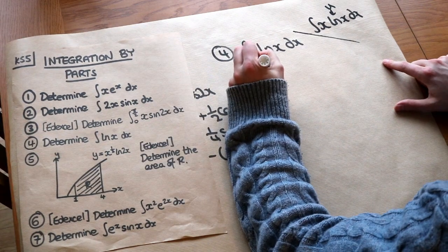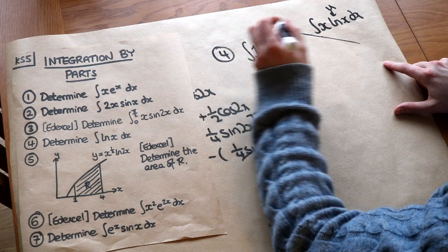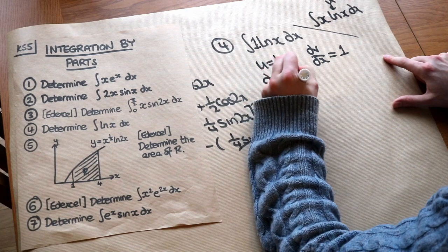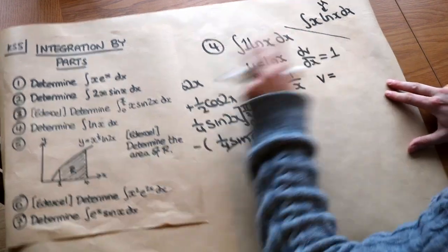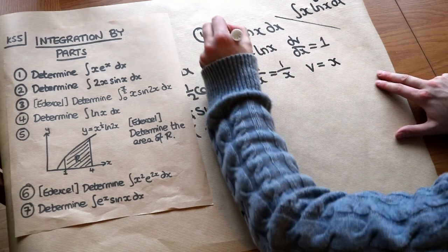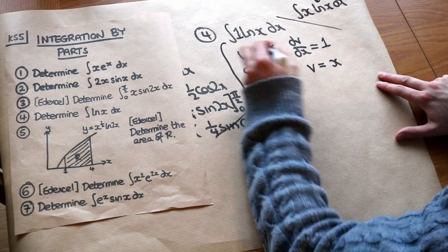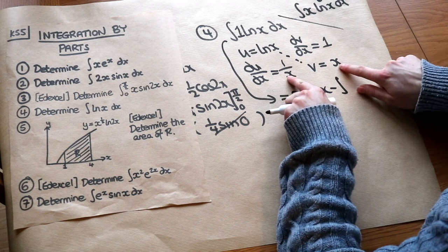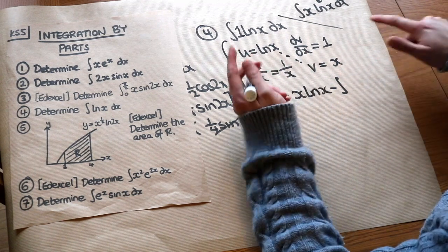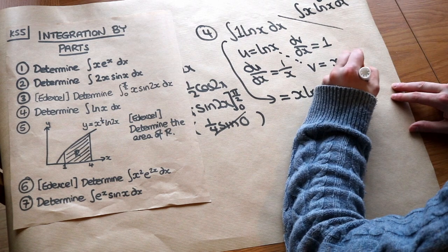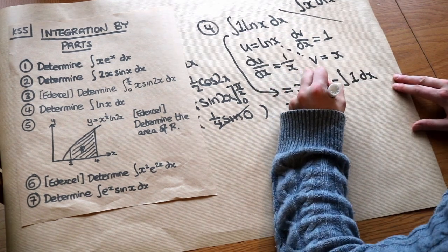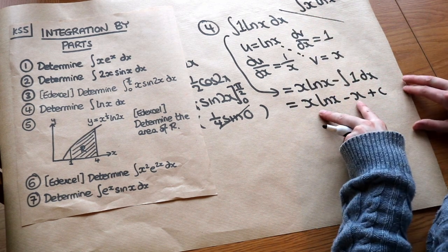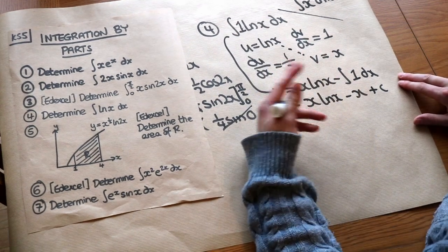So we make u = ln(x) and dv/dx = 1. Differentiating: du/dx = 1/x. Integrating: v = x. Applying integration by parts: uv = x·ln(x), minus the integral of (1/x)·x dx — that's just integrating 1 — which gives x·ln(x) − x + c. This is actually a worthwhile result to memorise: the integral of ln(x) is x·ln(x) − x + c.